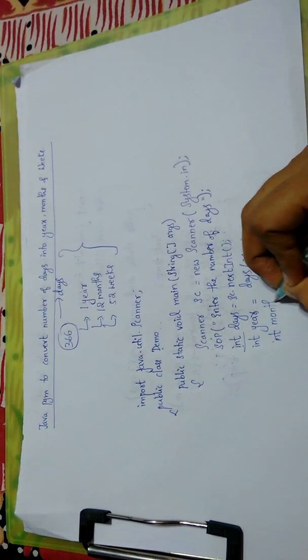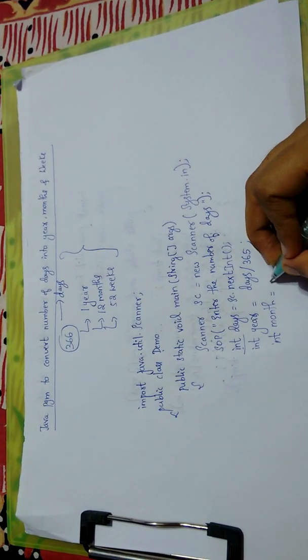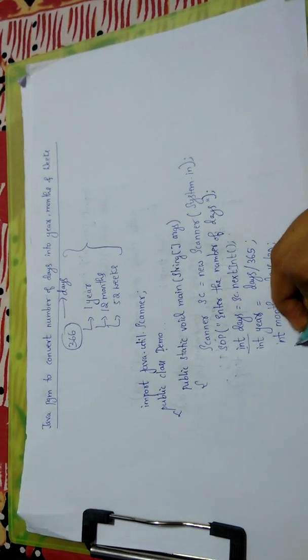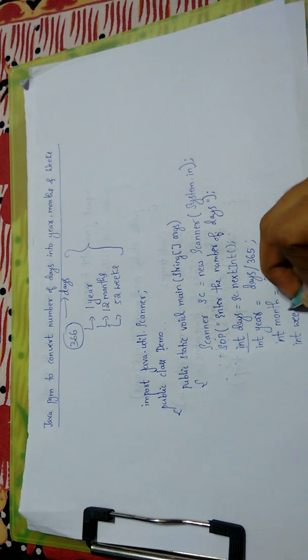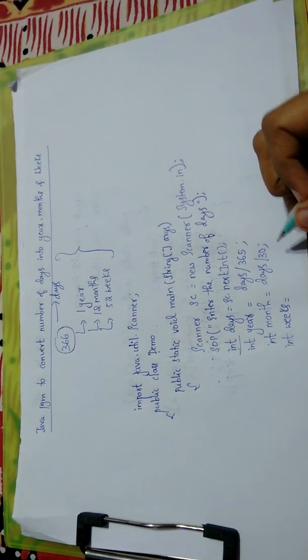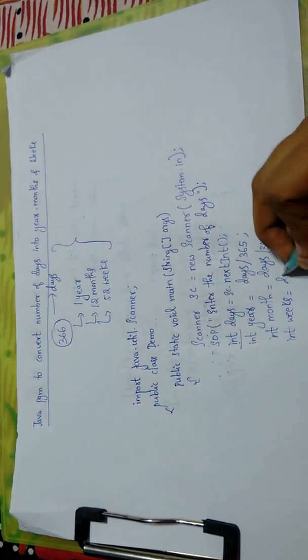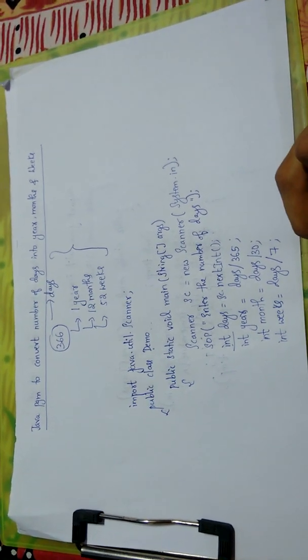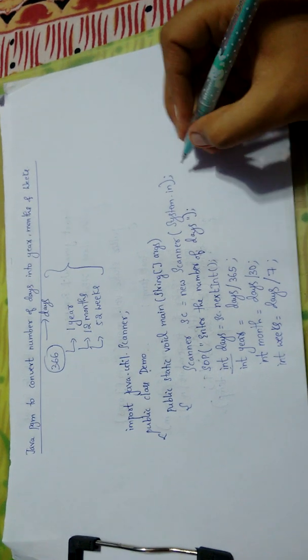you write equals the number of days you entered divided by 30. And int weeks equals the days divided by 7. Now you can proceed